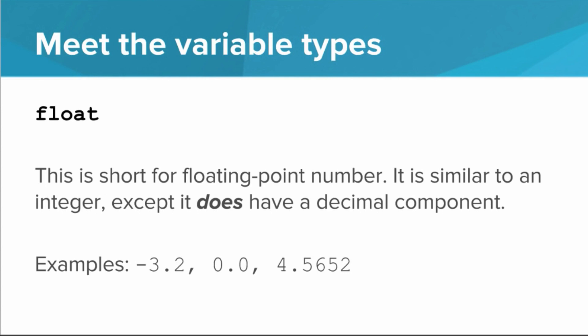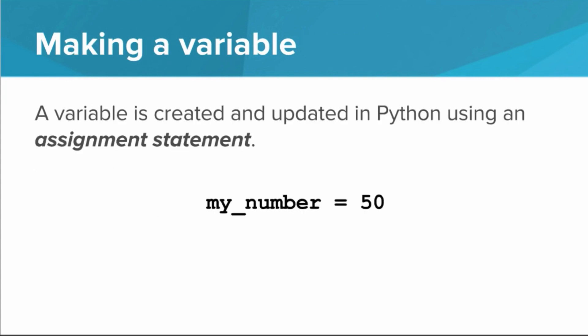Note that the decimal component can be zero. So 0.0 is in fact equal to the integer zero. You can create a new variable, or update an existing variable in Python using what's called an assignment statement.